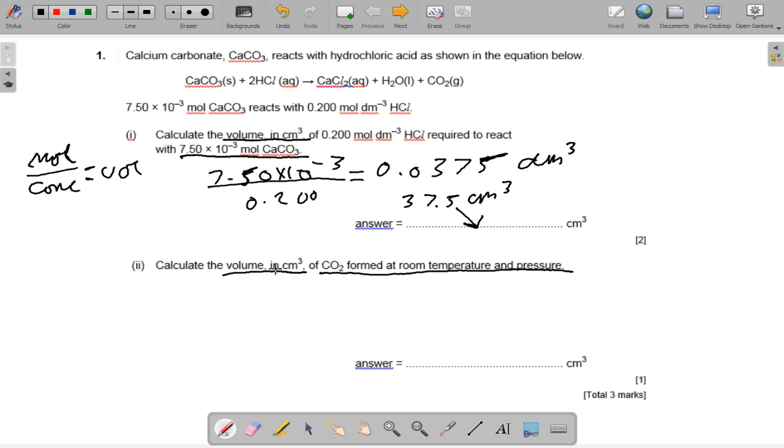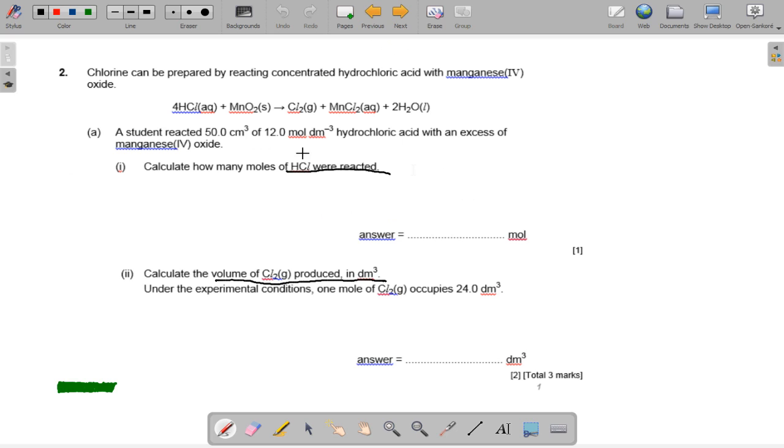And it's on the answer line. You should calculate the volume of CO2, and that is 7.5 times 10 to the minus 3 times by 24,000, and we get 900 centimeter cubed. Press next.